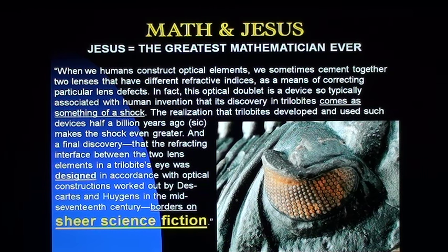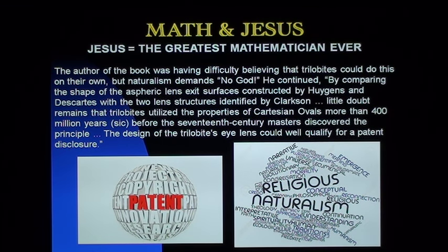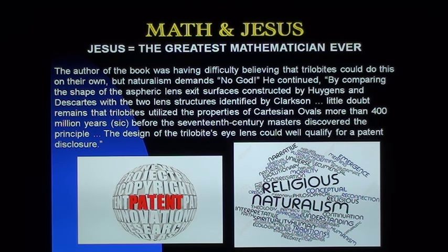Guess who made those eyes? Creator Christ, the greatest mathematician ever. The author continues: 'By comparing the shape of the aspheric lens exit surfaces constructed by Huygens and Descartes with the two-lens structures identified by Clarkson, little doubt remains that trilobites utilized the properties of Cartesian ovals before the 17th-century masters discovered the principle. The design of the trilobite eye lens could well qualify for a patent disclosure.'